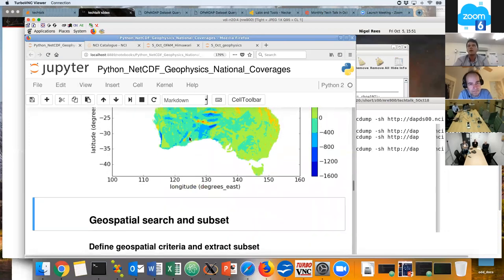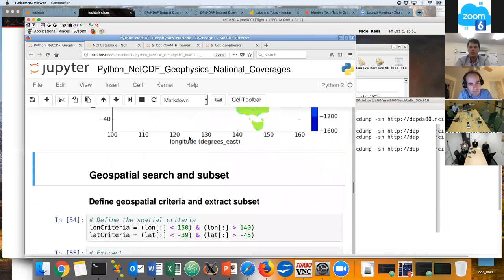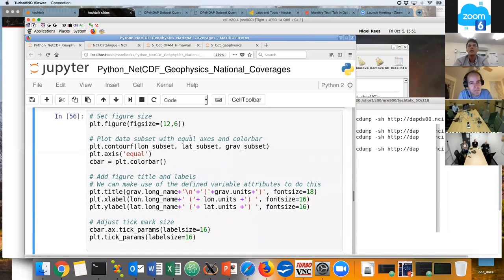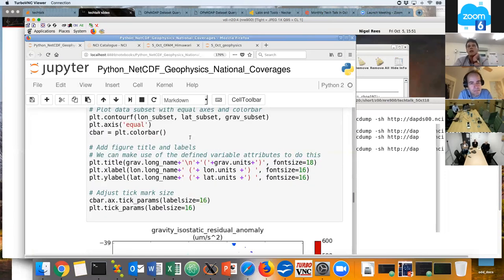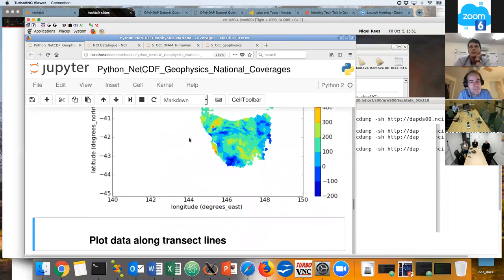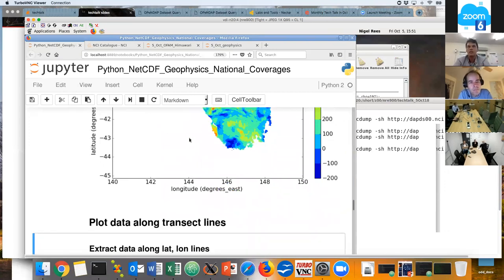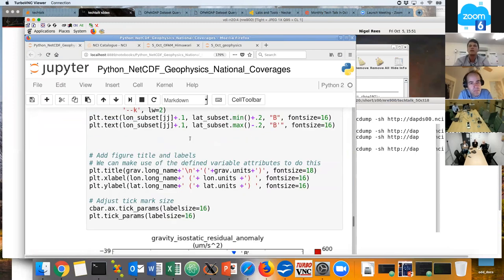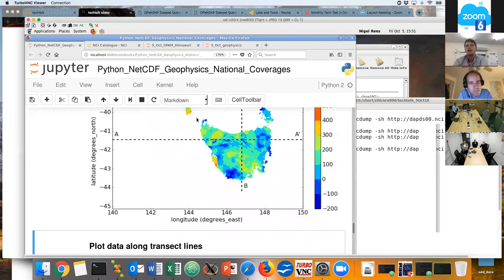And there we have it, a gravity map of Australia. If we want a subset, we can create some criteria for subsetting and plot that. Here we just have a small subset and you can continue to do things like put transect lines and the like, lots of things you can do. That's one geophysics example, but it's essentially the same with other disciplines.